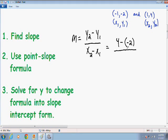Divided by x2 minus x1. Our x2 is 1 minus x1, and our x1 value is -1.